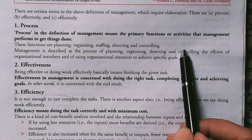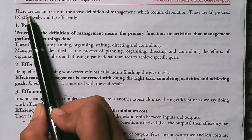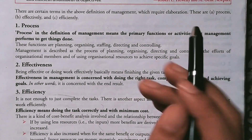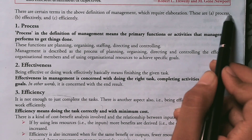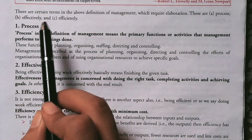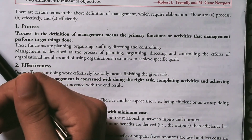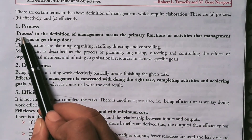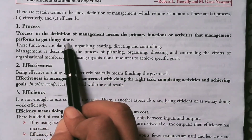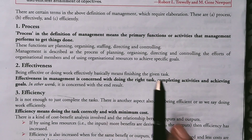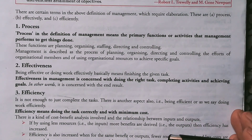There are certain terms we need to understand before going deeper into the concept. We will explain them in a brief overview and in detail. What is the process? We can call it a proper methodology. Process in the definition of management means the primary functions and activities that management performs to get things done. Primary means we cannot proceed without this function.